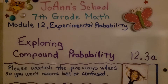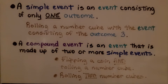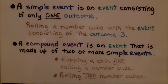Lesson 12.3a: Exploring Compound Probability. A simple event is an event consisting of only one outcome — for example, rolling a number cube with the event consisting of the outcome three.